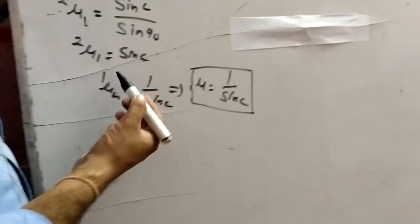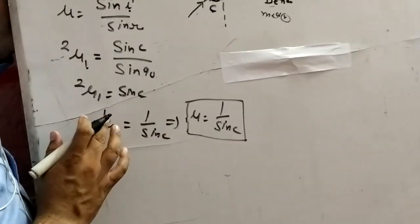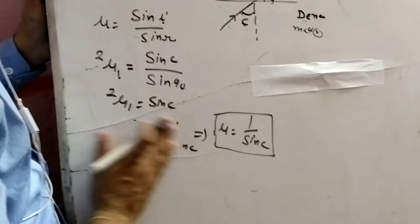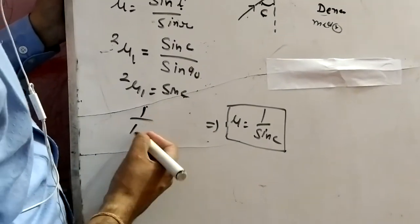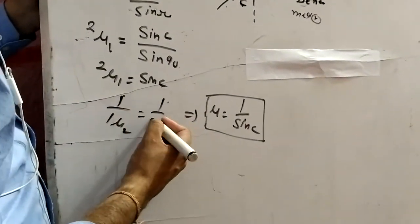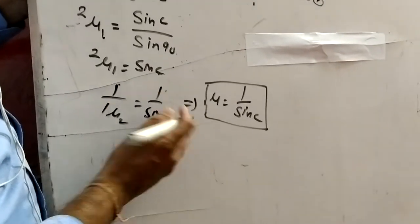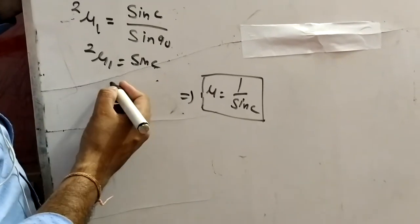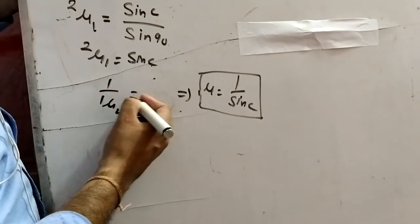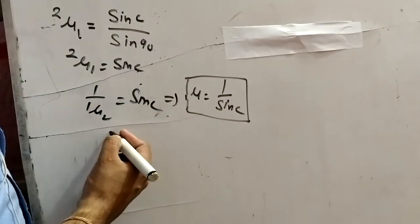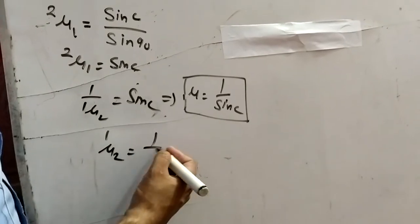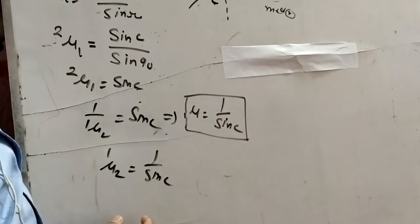So, 1 upon 1 mu 2 is equal to 1 upon sin C. So, 1 mu 2 is equal to 1 upon sin C.